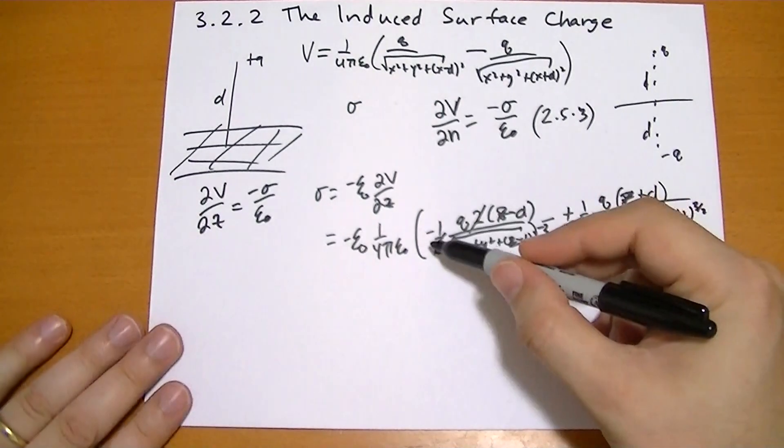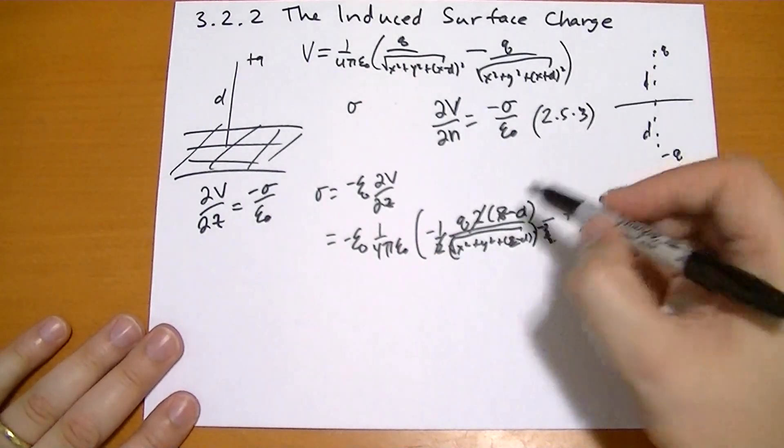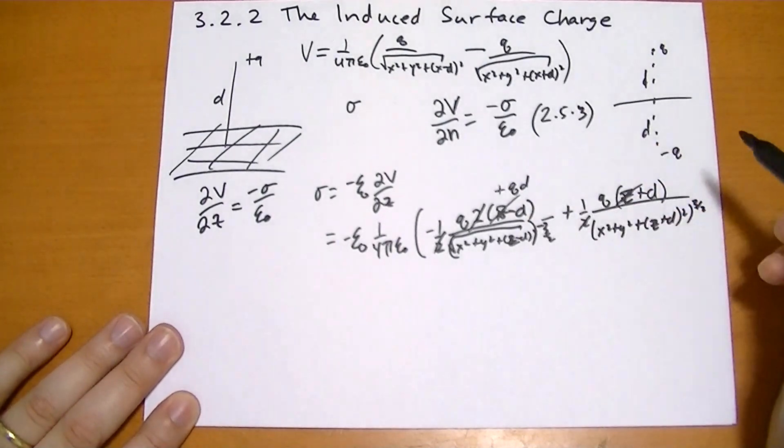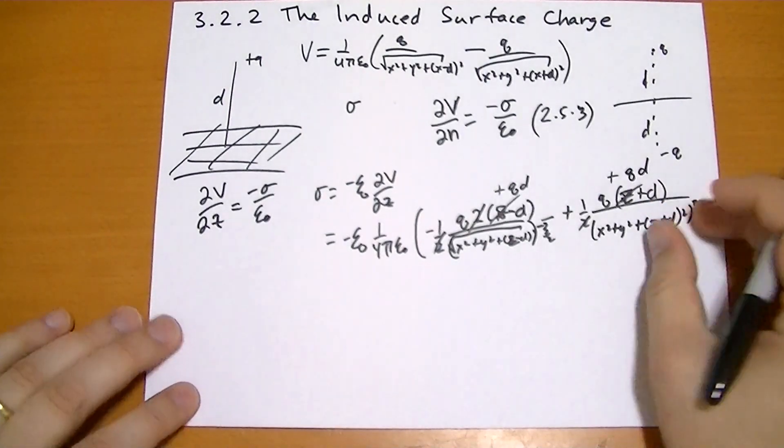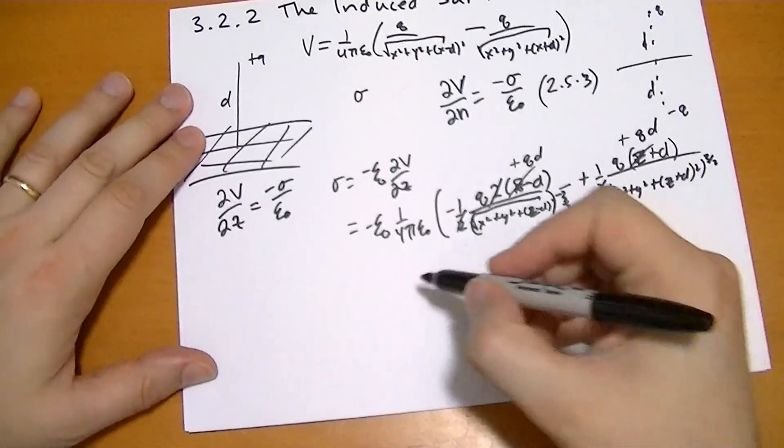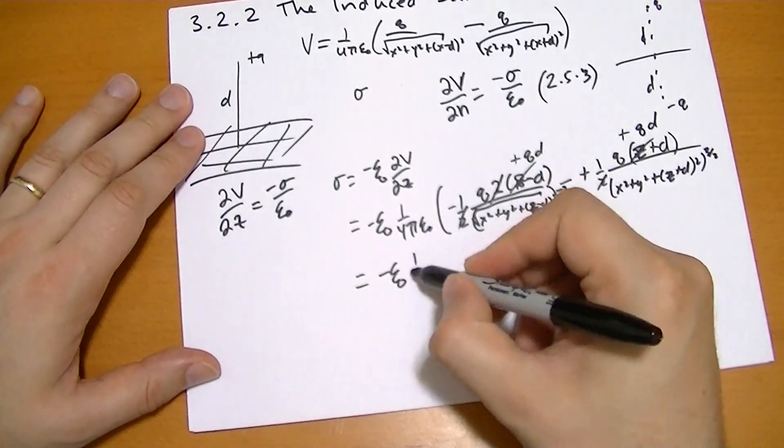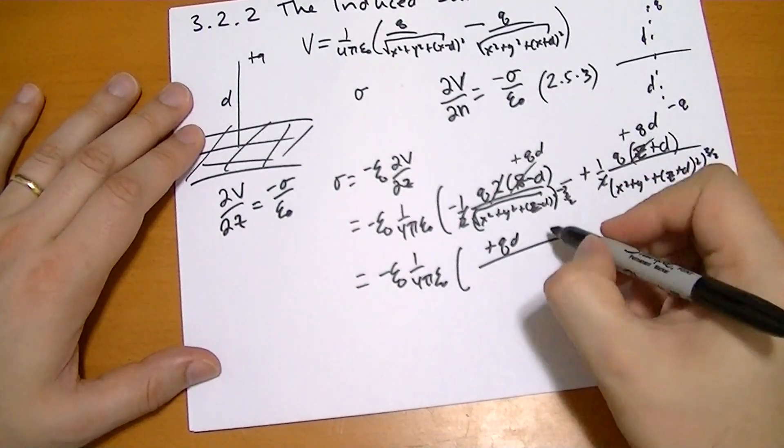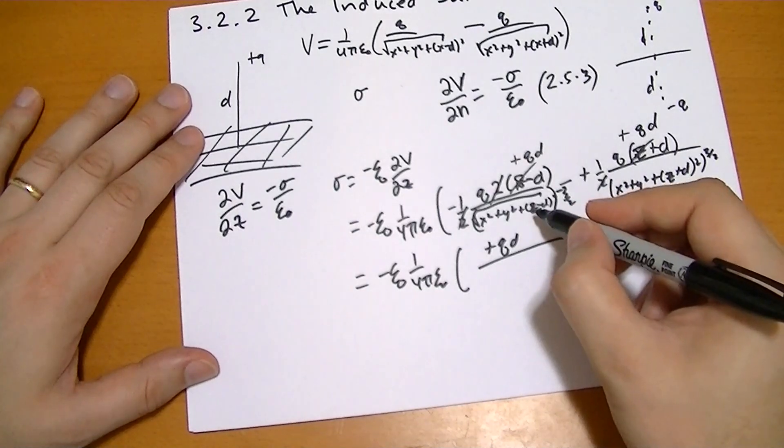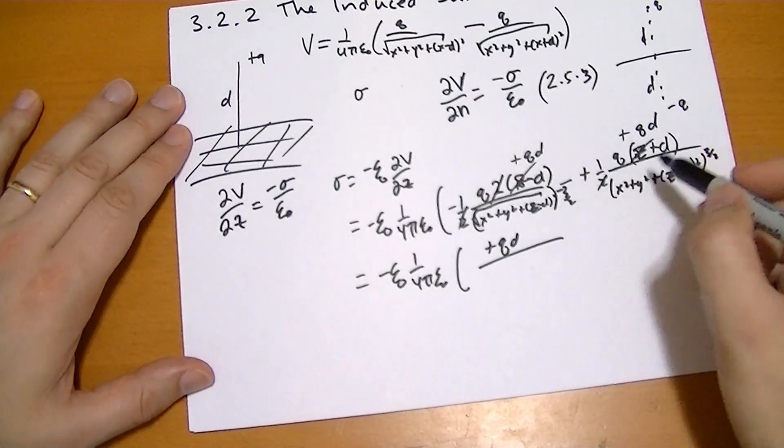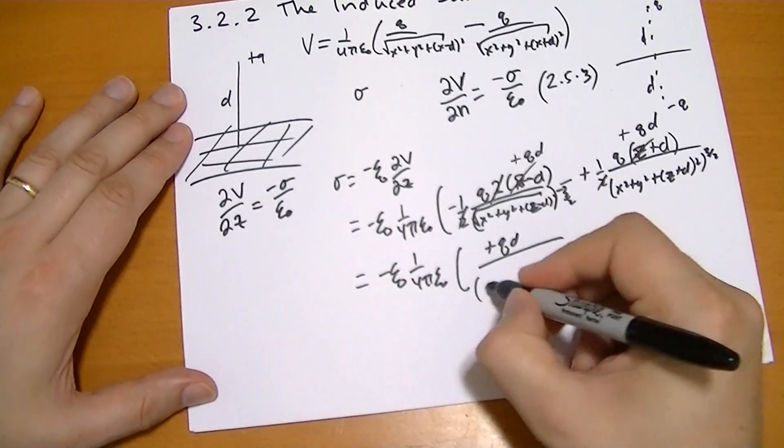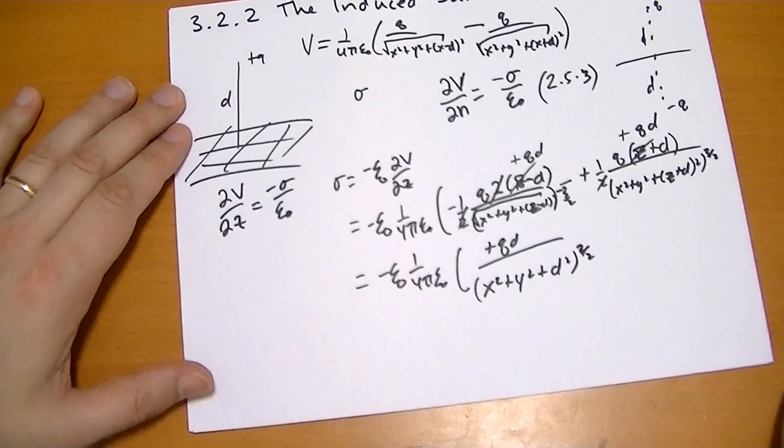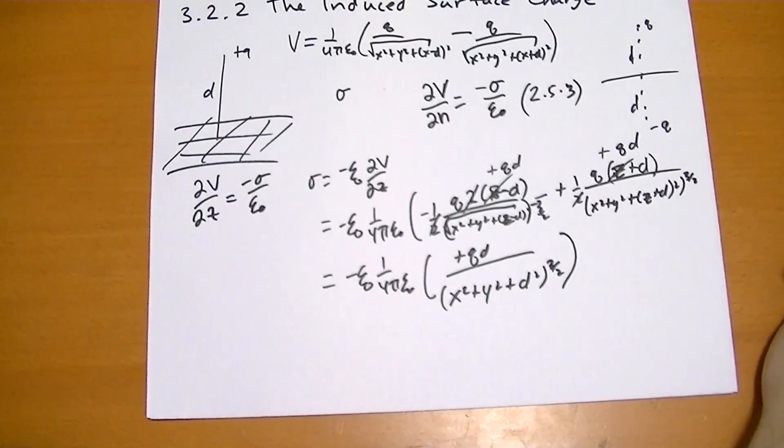So we simplify these. We have a minus z and a plus z, so these z's cancel. So we have a minus minus d, so we have plus qd on top here, and plus qd over here. We're looking at the surface, so we set z equal to zero. So we get minus epsilon naught one over four pi epsilon naught, plus qd over x squared plus y squared plus d squared, x squared plus y squared plus d squared. So we get x squared plus y squared plus d squared to the three-halves.